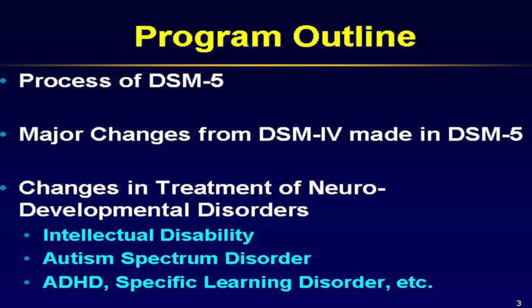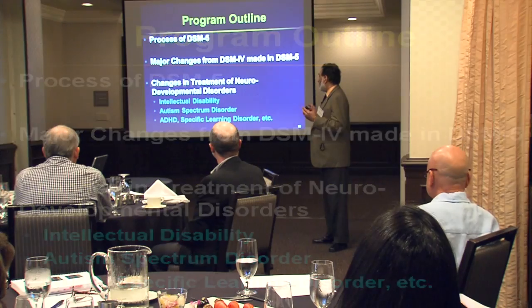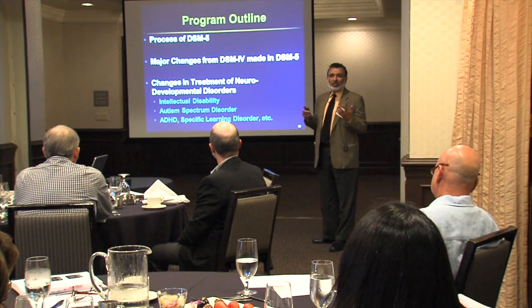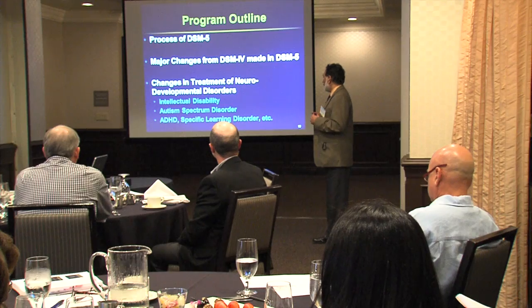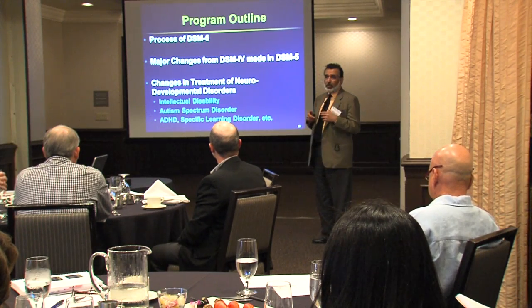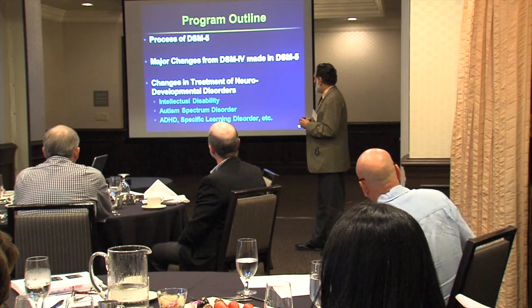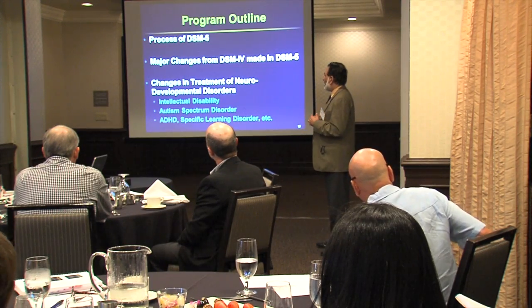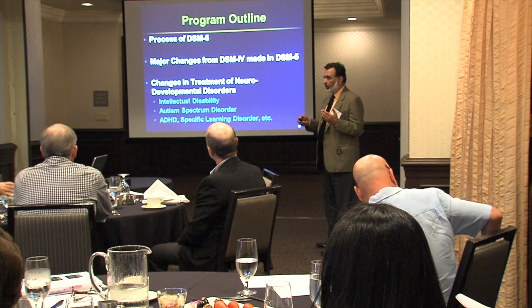I'll briefly talk about the process of DSM-5, the major changes broadly across the manual from DSM-4 to DSM-5, and then hone in on the changes in the treatment of neurodevelopmental disorders specifically relevant to this meeting — including changes in the DSM treatment of intellectual disability, autism and related disorders, and briefly touch upon ADHD and specific learning disorders.